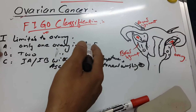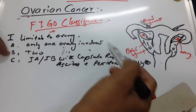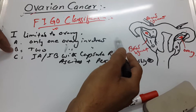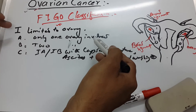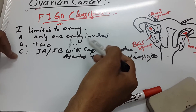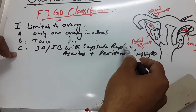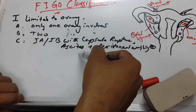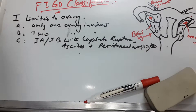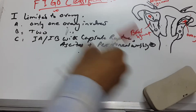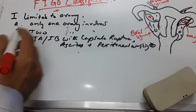You must understand that in Stage IA or IB there are no clinical symptoms of ascites and no rupture of capsules. But in Stage IC there will be capsule ruptures as well as ascites and positive peritoneal washing.